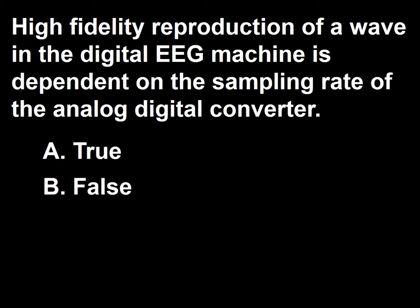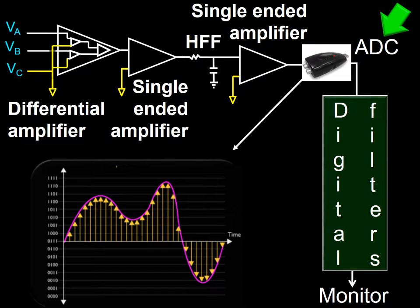Next question: High-fidelity reproduction of a wave in a digital EEG machine is dependent on the sampling rate of the analog-to-digital converter. A, true; B, false. The function of an analog-to-digital converter is to convert continuous fluctuating current into discrete numerical data points in the form of binary numbers. Thus, one of the attributes of an ADC, in order for it to do its job, is to have an appropriate sampling rate. In the next few frames, I will address this issue.